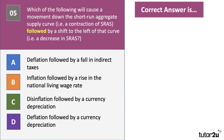Question five — the penultimate question, slightly trickier. Which of the following will cause first a movement down the short run aggregate supply curve — a contraction of SRAS — followed by a shift to the left of that curve? We're looking for a movement down the aggregate supply curve and then an inward shift of aggregate supply. Press pause and have a go.